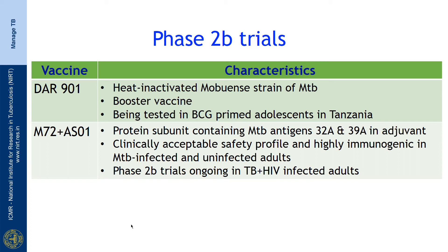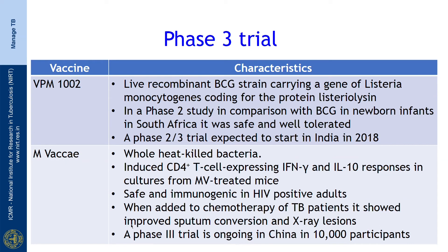In Phase 3, the most advanced stage of clinical trial, we have 2 vaccines. VPM1002 is a live recombinant BCG strain carrying a gene from Listeria monocytogenes coding for the protein listeriolysin. In Phase 2 studies comparing it with BCG in newborn infants in South Africa it was safe and well tolerated, and a Phase 2/3 trial is expected to start in India in 2018. Mvacay is a whole heat-killed bacteria vaccine that induces CD4 T cells expressing interferon-gamma; it is safe and immunogenic in HIV-positive adults, and when added to chemotherapy of TB patients it showed improved sputum conversion. It is a therapeutic vaccine and a Phase 3 trial is ongoing in China with more than 10,000 participants.